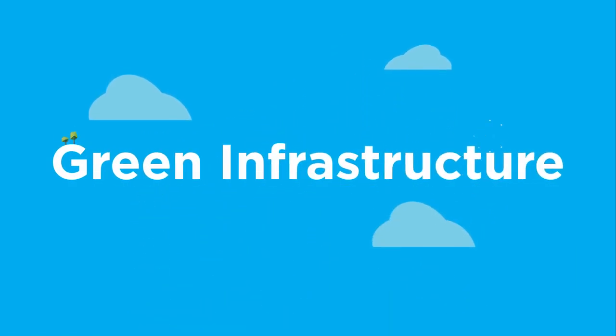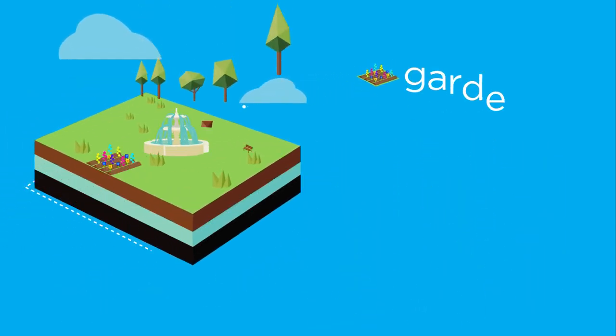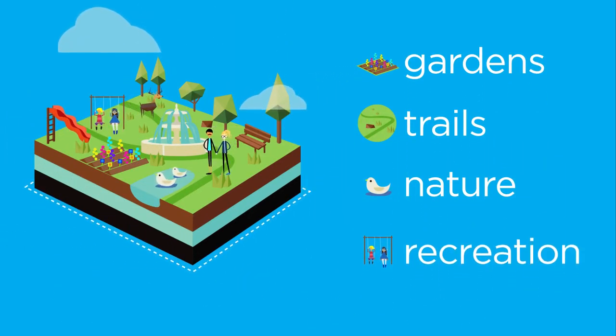This process is known as green infrastructure, and it's not just limited to parks. Well-designed gardens, trails, natural areas, and recreation centers can all be designed to put stormwater to good use.